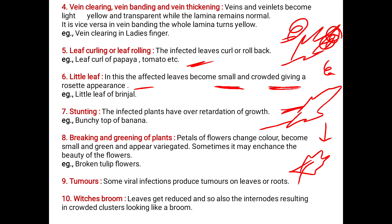Next comes the breaking and greening of plants. The petals of the flowers change color, become small and green, and appear variegated. The petals lose their actual color and turn green. Sometimes it may enhance the beauty of the flower. The example is broken tulip flower.